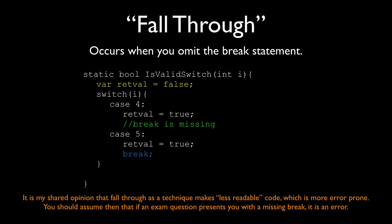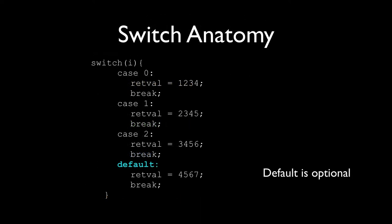The default block of a switch statement runs if none of the other conditions are satisfied. You don't have to include a default — if you want nothing to happen when no case matches, that's completely legitimate. But if you do include it, it will catch anything that didn't match a specific case. You do still need a break statement after default even though it's the last thing. C# requires it and won't compile without it.